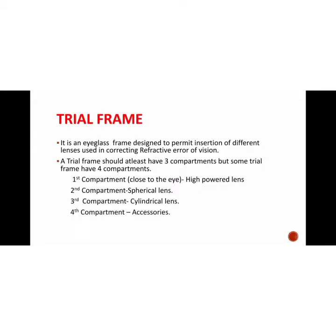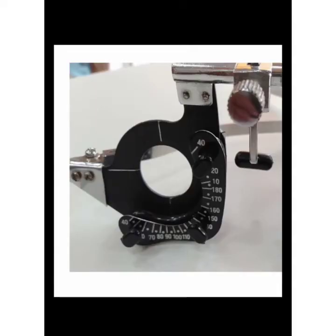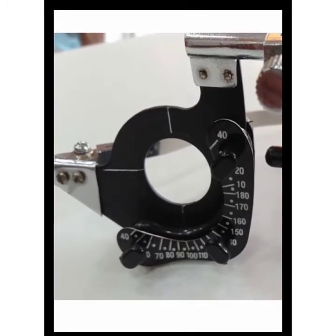Usually a trial frame has 4 compartments, though some trial frames have 3 compartments. The first compartment, which is closest to the eye, is used for insertion of high-powered lenses. In the second compartment we insert spherical lenses, and in the third compartment we insert cylindrical lenses. We need to align the correct axis for the cylindrical lens, which is why it goes in the third compartment — this image clearly shows the axis of the cylinder.